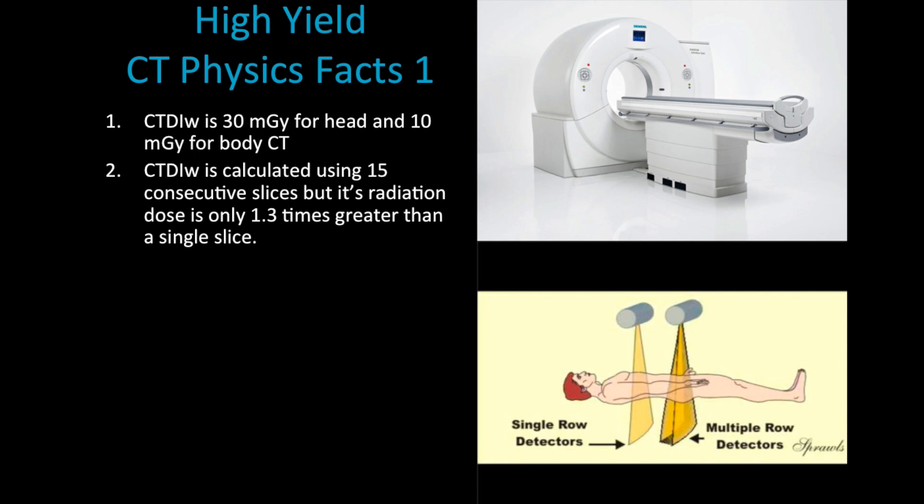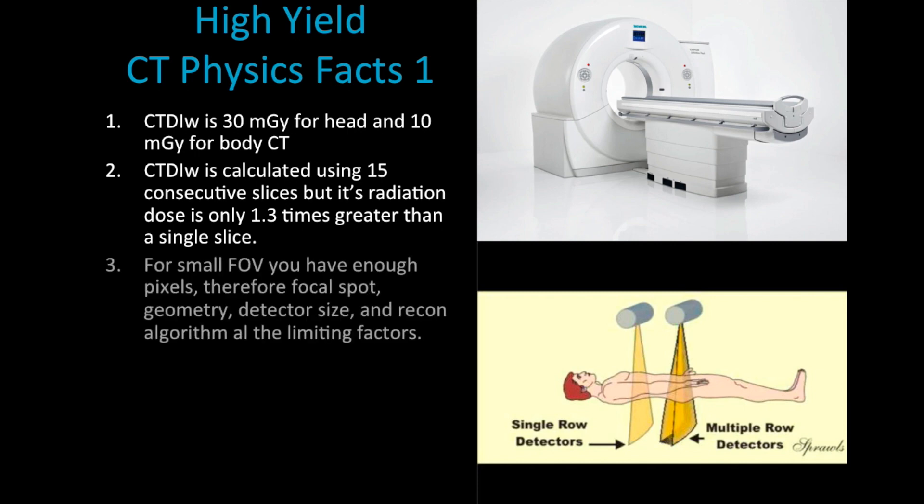Moving towards spatial resolution, a small field of view such as in a head CT has enough pixel values or pixels, and we know that's not going to be our limiting factor. Our limiting factor can be our focal spot, our geometry, or actual detector size and the different reconstruction algorithms.